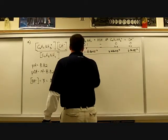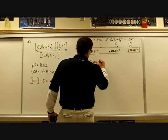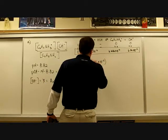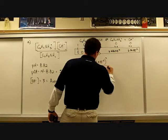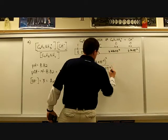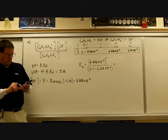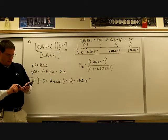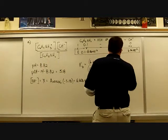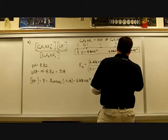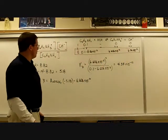Now we plug into the KB expression: KB equals (6.606 × 10⁻⁶)² divided by (0.1 minus 6.606 × 10⁻⁶), which gives us 4.37 times 10 to the negative 10. There's your KB.